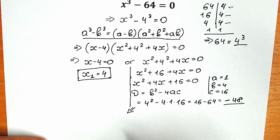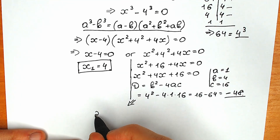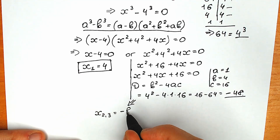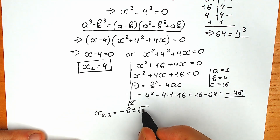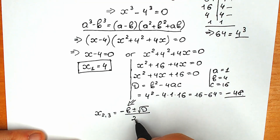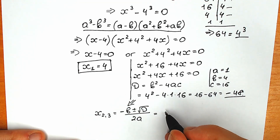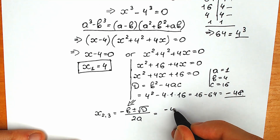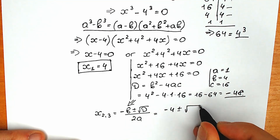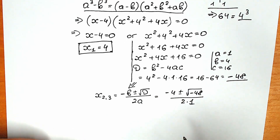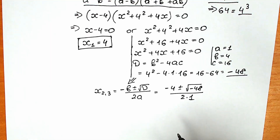So x₂ and x₃ equal to the basic quadratic formula: minus b plus-or-minus square root of D, all over 2a. Plugging in: minus 4 plus-or-minus square root of minus 48, divided by 2 times 1. Let's simplify this a little bit.